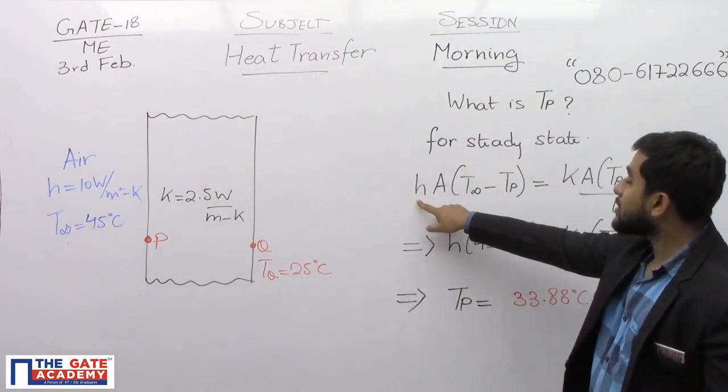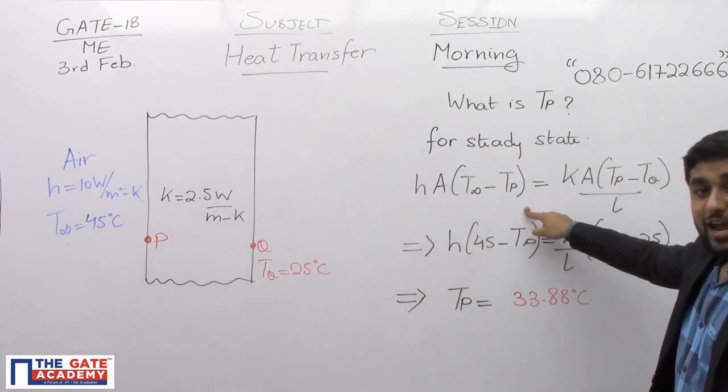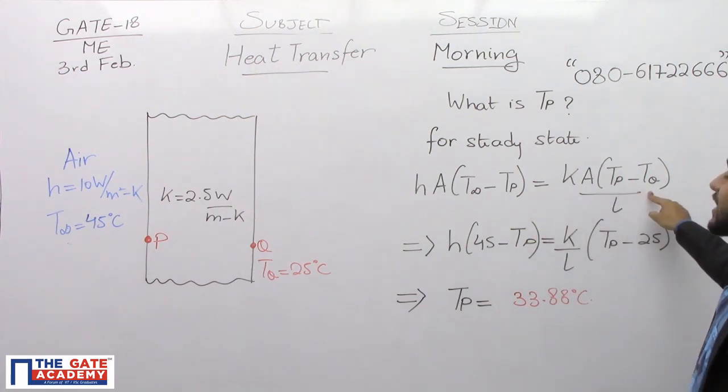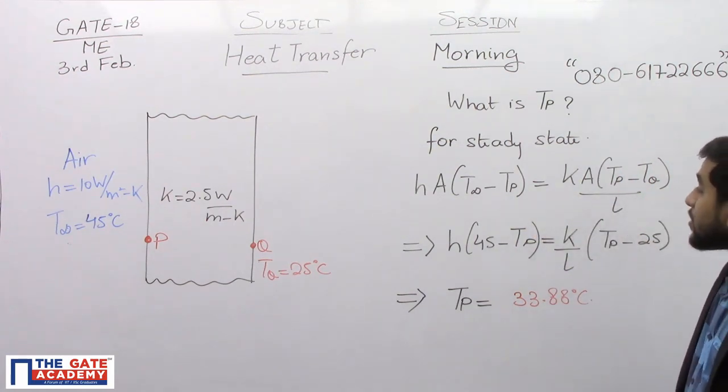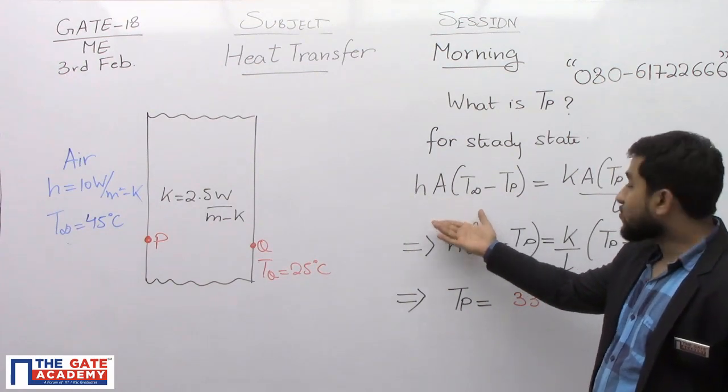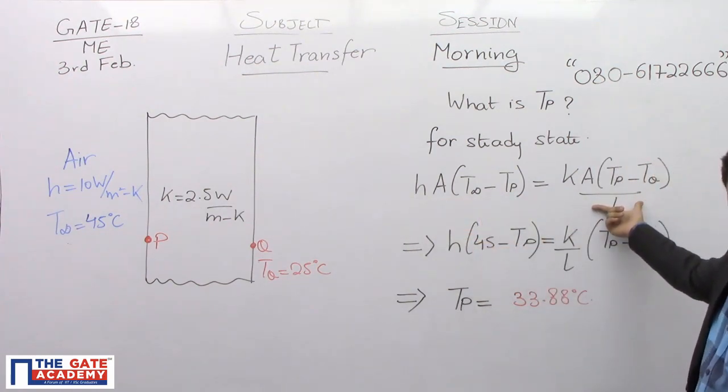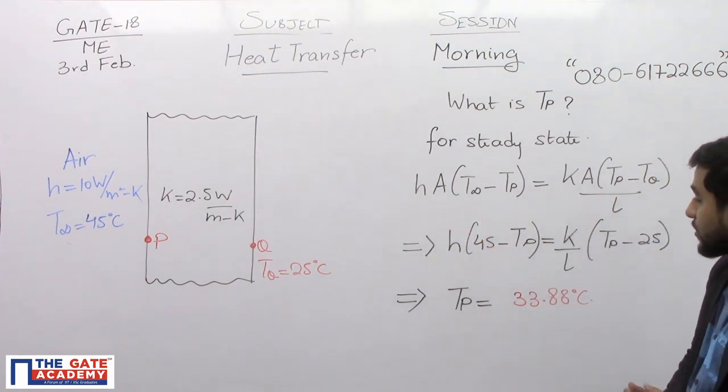I have simply said rate of convection at the phase P is equal to the rate of internal conduction. This is Newton-Richman law of cooling. This is Fourier's law of conduction, basically experimental form of Fourier's law of conduction.